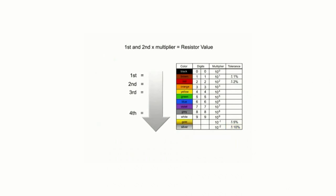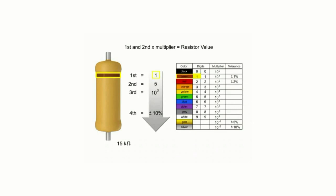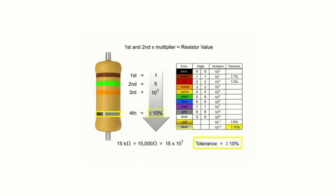In another example: if the second band is white, digit 2 is 9. If the third band is silver, multiply by 10 to the negative second power (0.01) — take 39 and move the decimal two places left, resulting in 0.39 ohms with a tolerance of plus or minus 10%. To determine bands for a 15 kilohm resistor: first digit 1 is brown, second digit 5 is green, multiplier of 10 to the 3rd is orange, and silver for 10% tolerance.